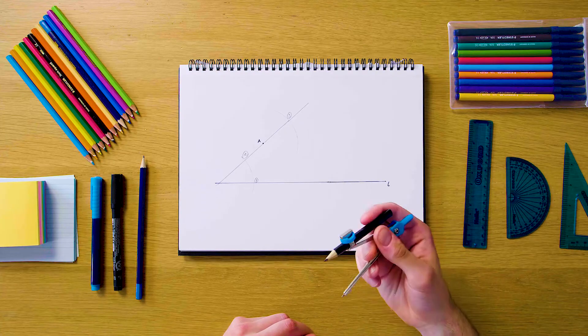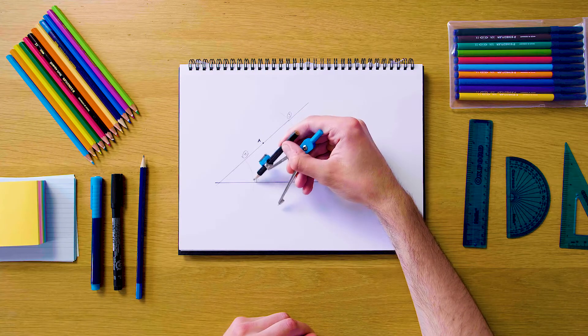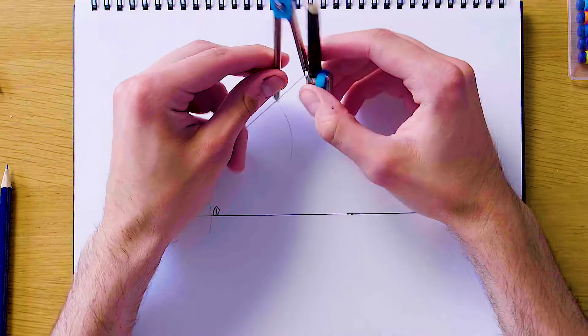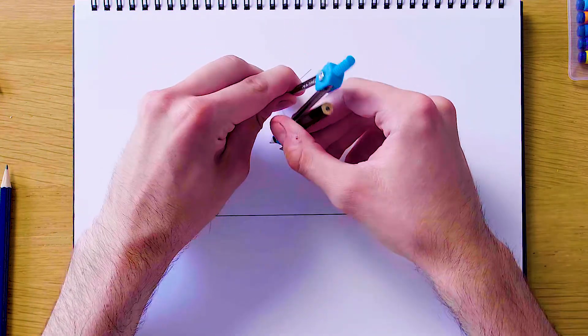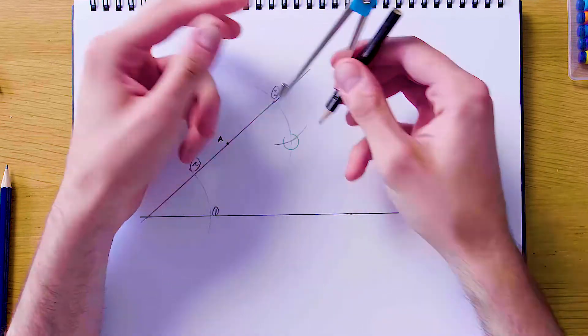So now we're going to have to change our compass distance and we're going to set it to be the distance linearly between vertices 1 and 2. Once we have this distance, we're going to swing this from vertex A3 to intersect with the arc there, and it's going to intersect somewhere to the right of A.